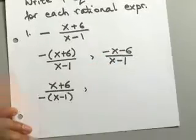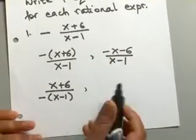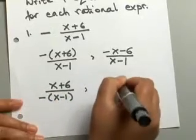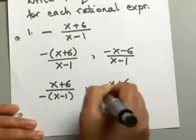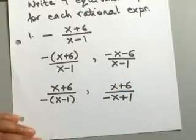And for the fourth one, do a similar sort of thing. When you put the negative on the denominator, for the next form, you can go ahead and distribute it. So, that will give you x plus 6 over negative x plus 1.